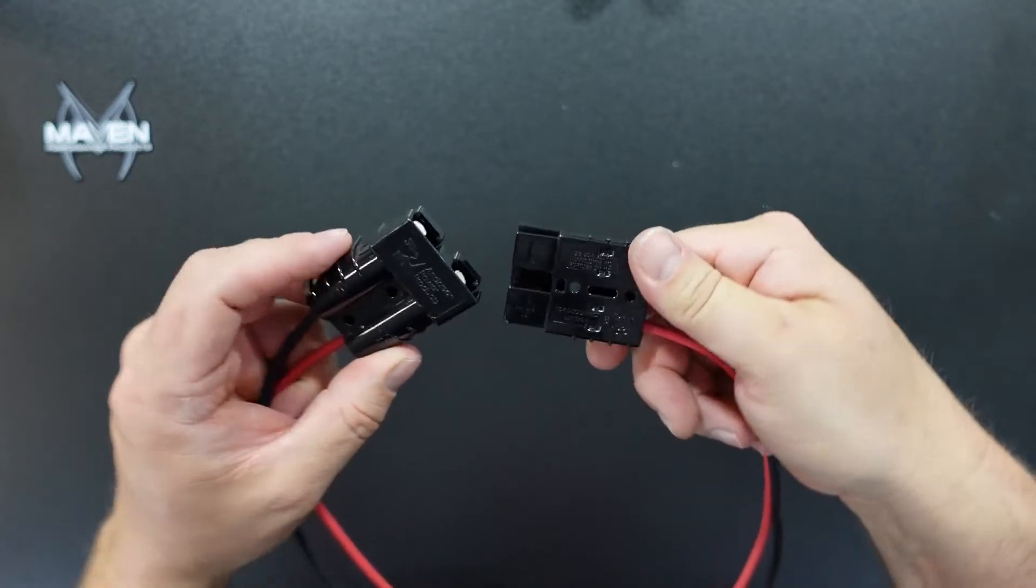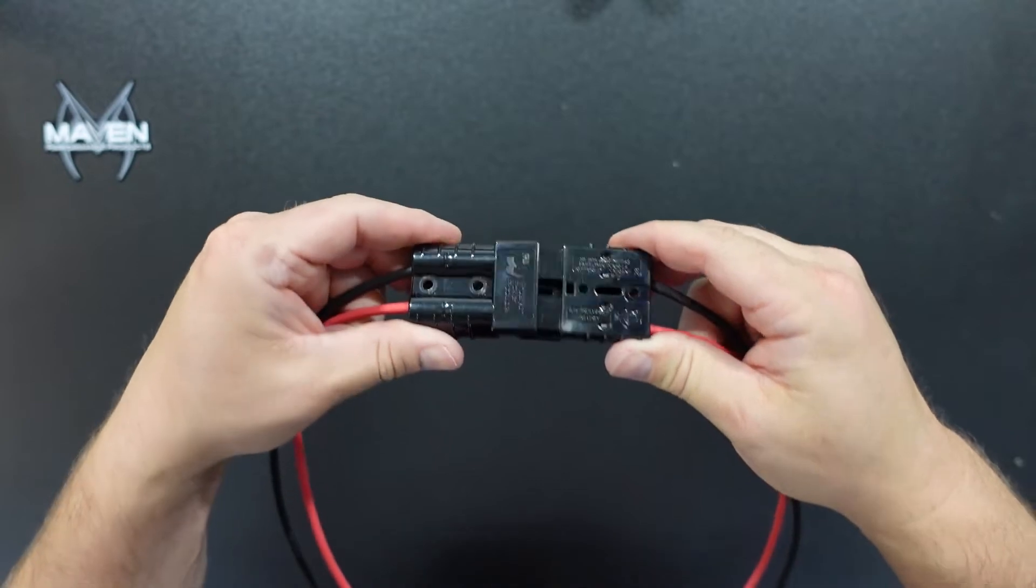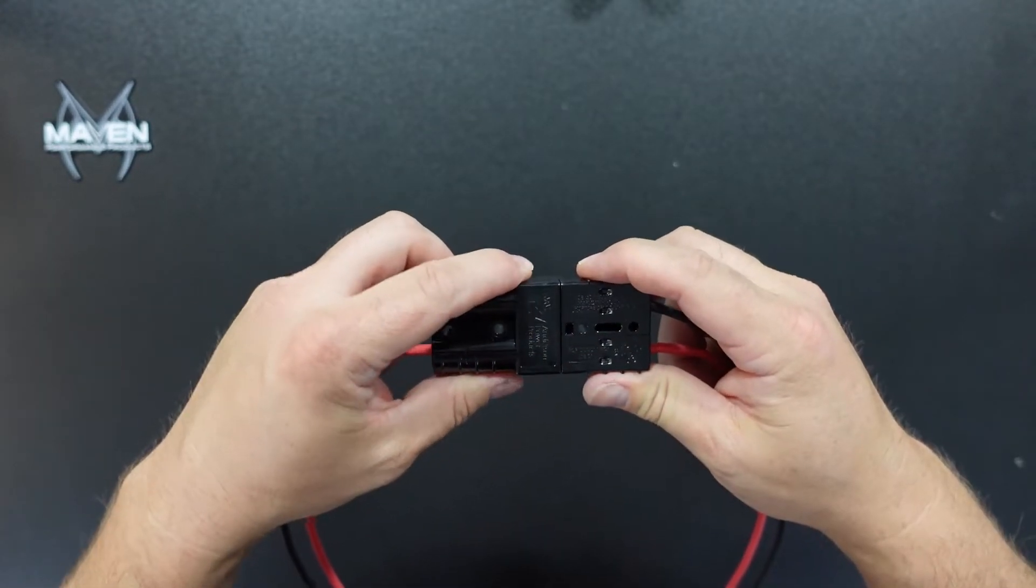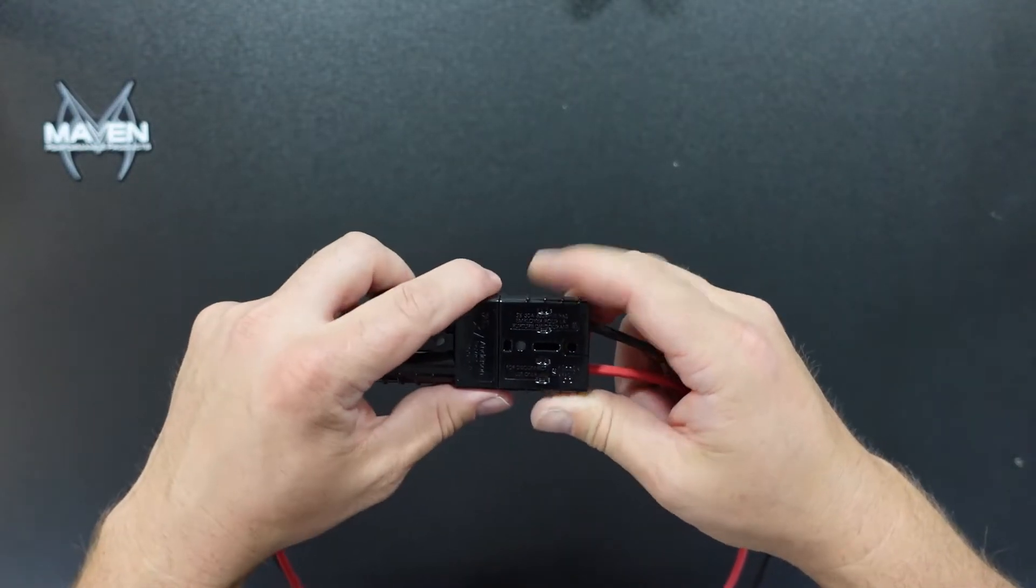And when you turn it around, turn one upside down. They're going to go together and clip together. Again, these are more preferred for something when the car is stationary, like a battery charger, nitrous bottle.